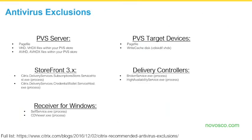On the topic of antivirus, exclusions are always a good idea — excluding certain processes to make sure they don't hamper Citrix-level performance. It's always good to stay on top of recommendations, because antivirus exclusions you implement today aren't necessarily going to be recommended in a couple of years as products are released or discontinued. Keep up with the latest recommendations from Citrix and Microsoft. There's a link from a Citrix blog at the bottom of the slide with a list of Citrix-recommended antivirus exclusions.